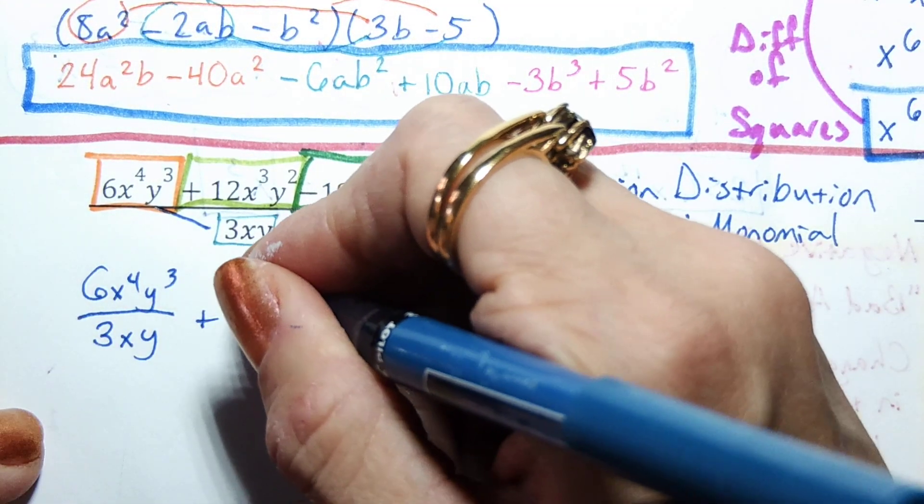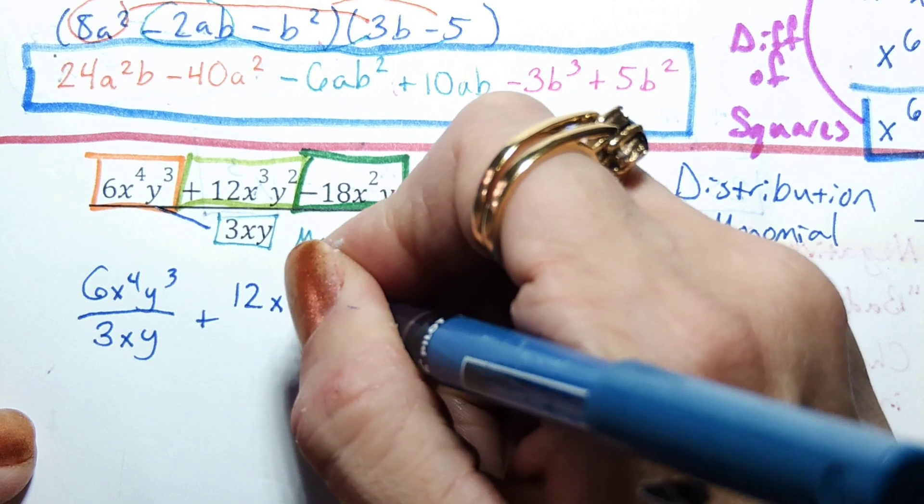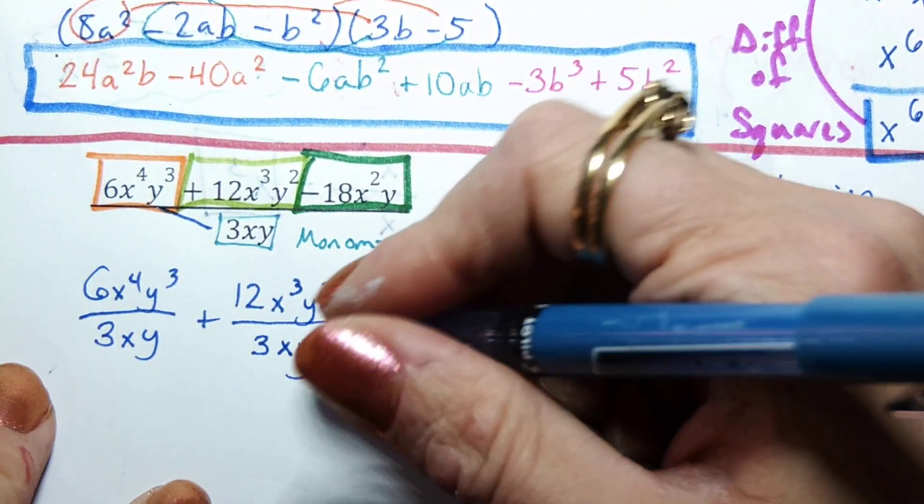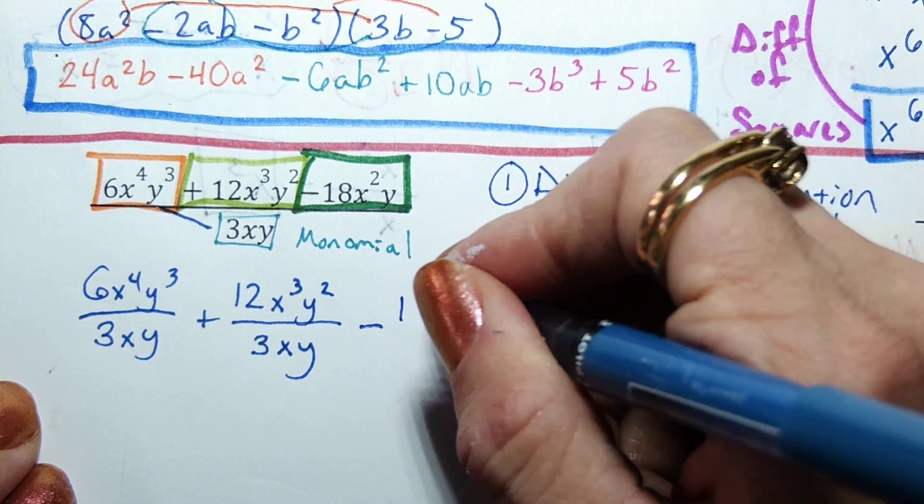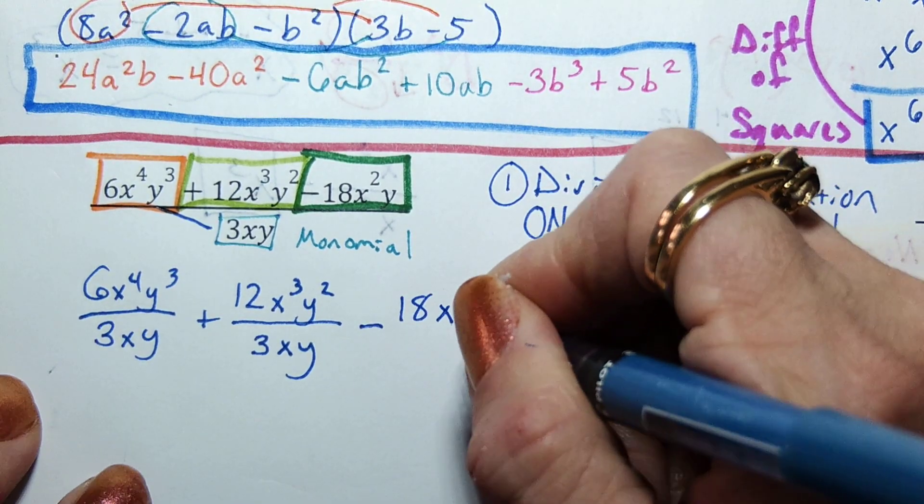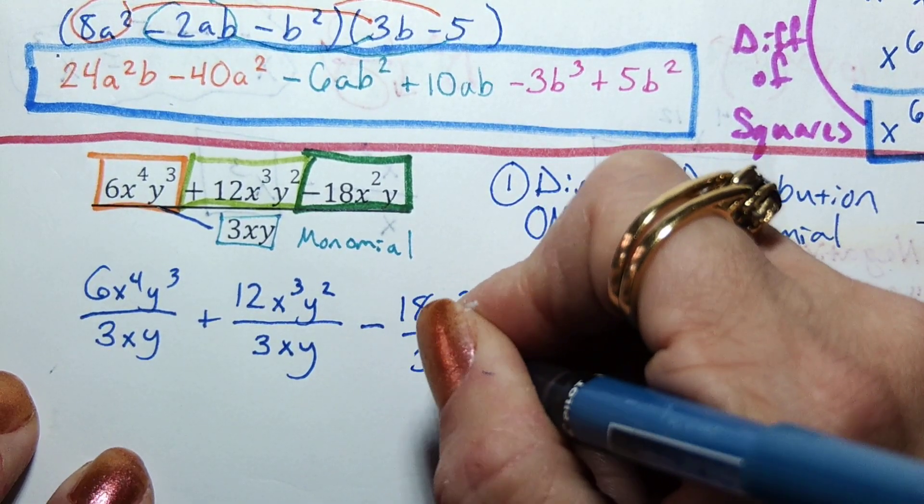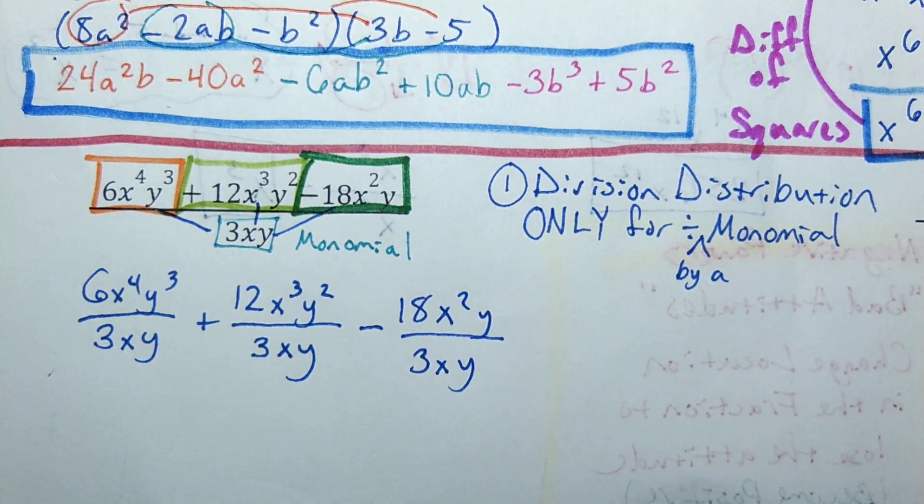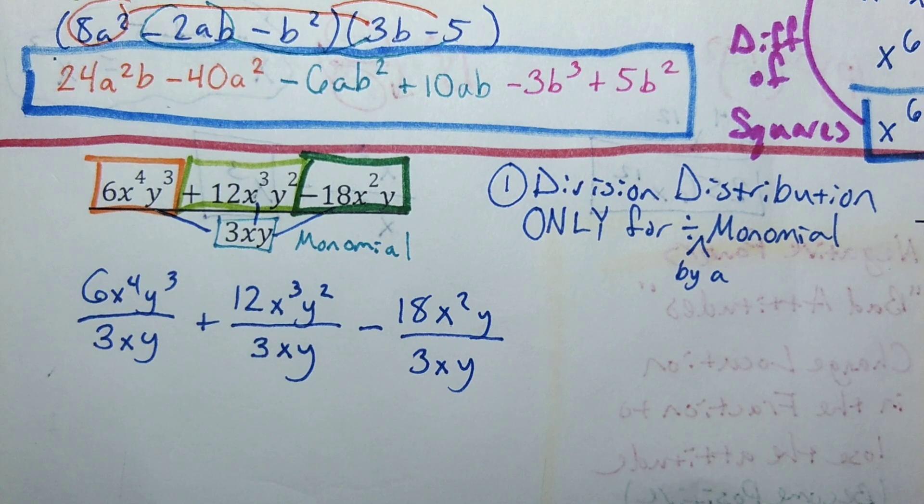So I'm going to take 6x^4y^3 divided by 3xy. Then I'm going to take 12x^3y^2 divided by 3xy, and then minus 18x^2y over 3xy. So every one of those chunks on the top I'm going to divide by 3xy.